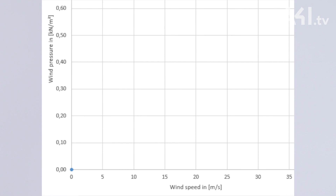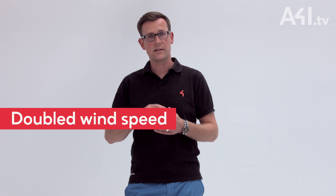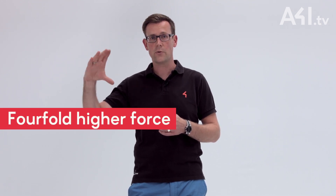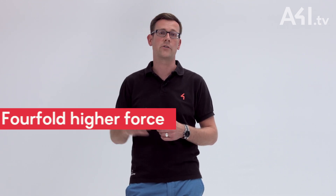The square in this equation has a decisive influence. It means that a doubled wind speed results in a four-fold higher force.